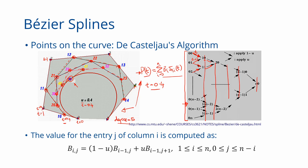Consider any path from the initial control points to this single final point. Such a path can have at most n steps if you have n+1 control points.